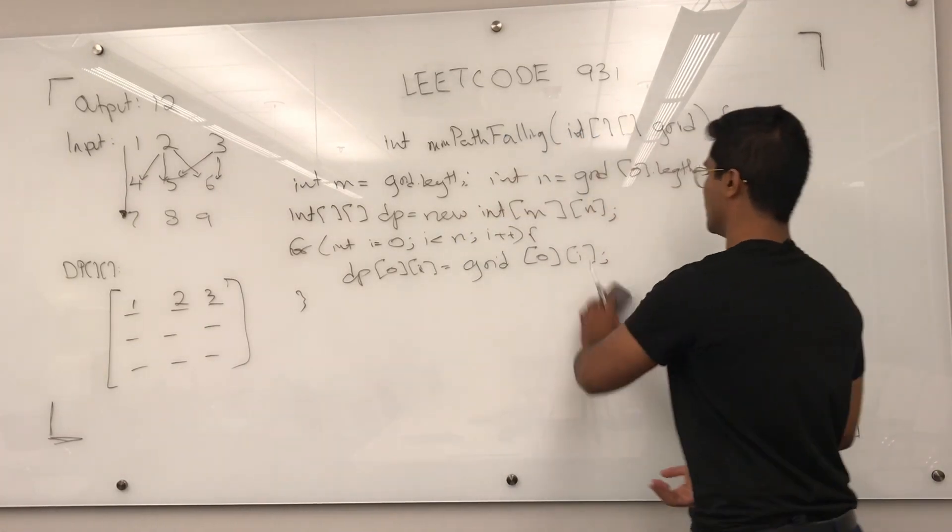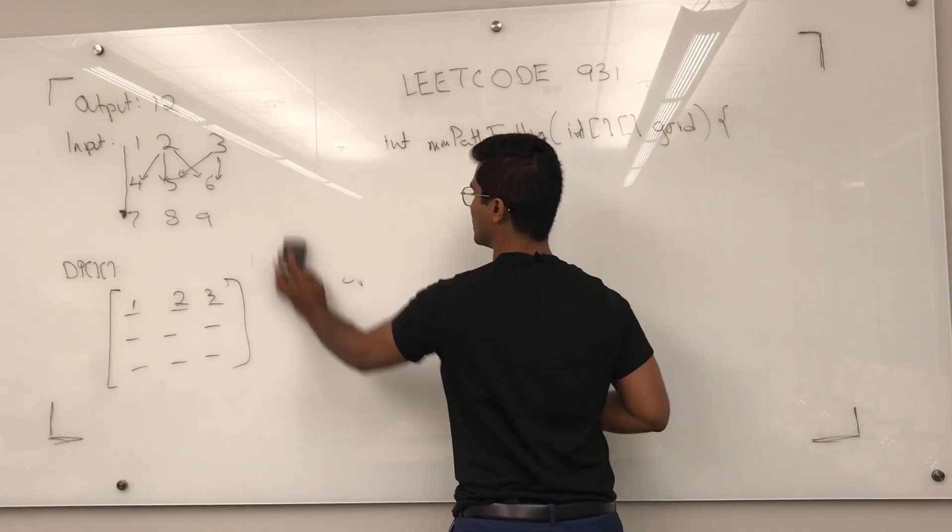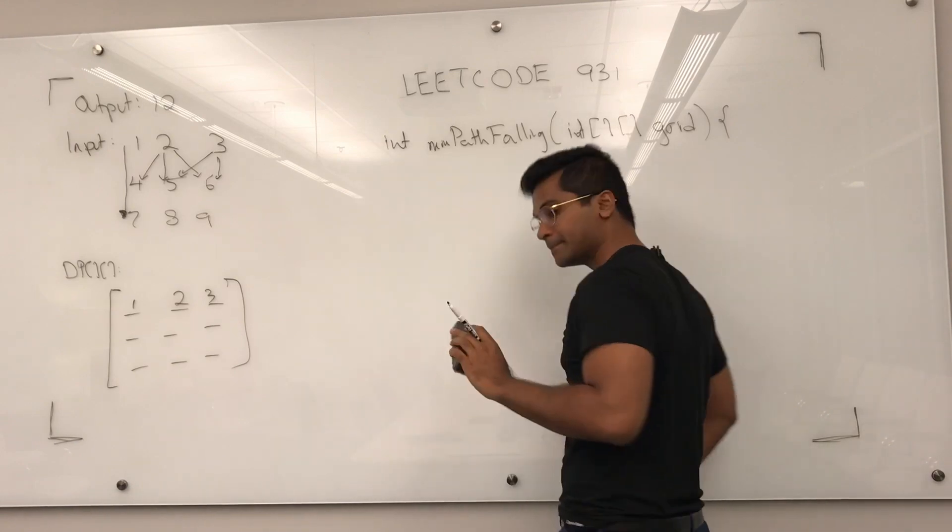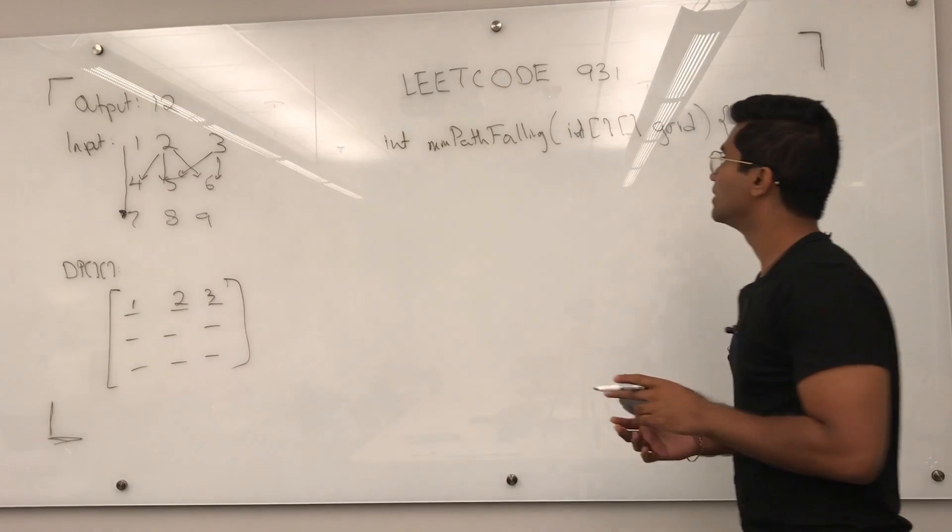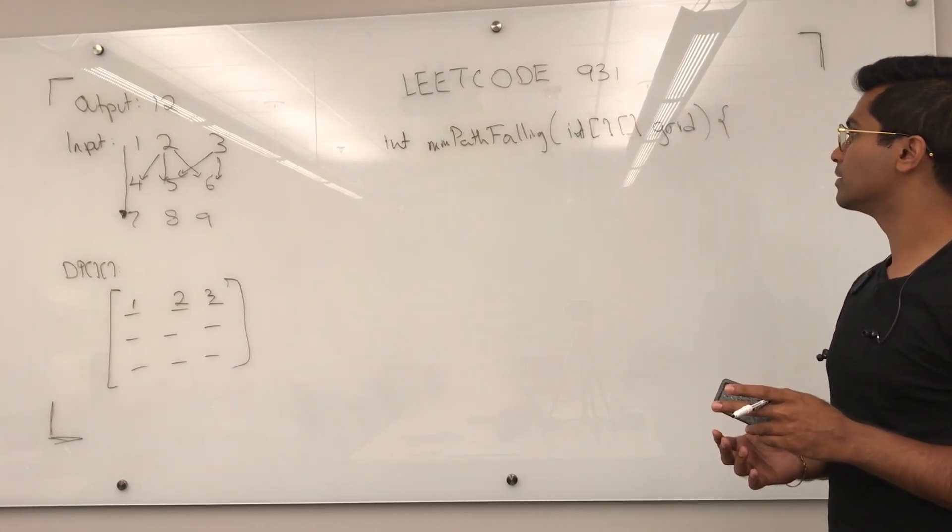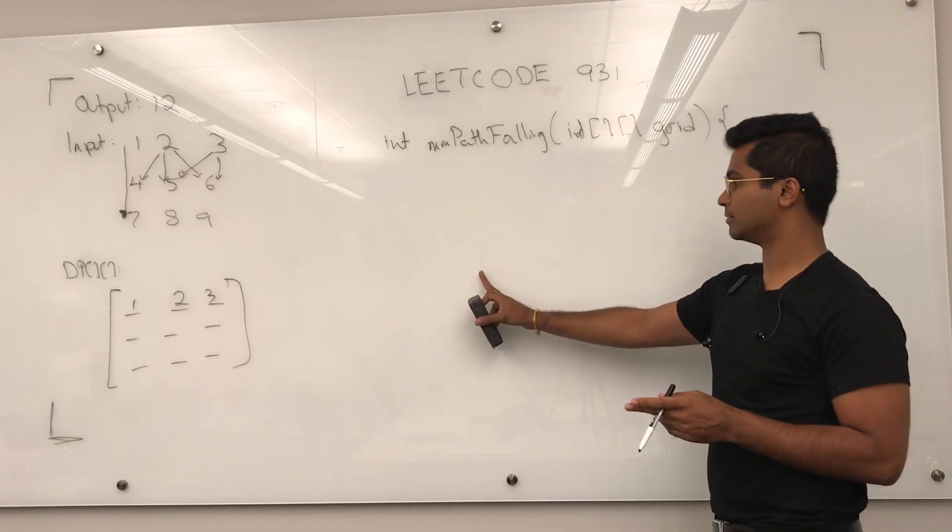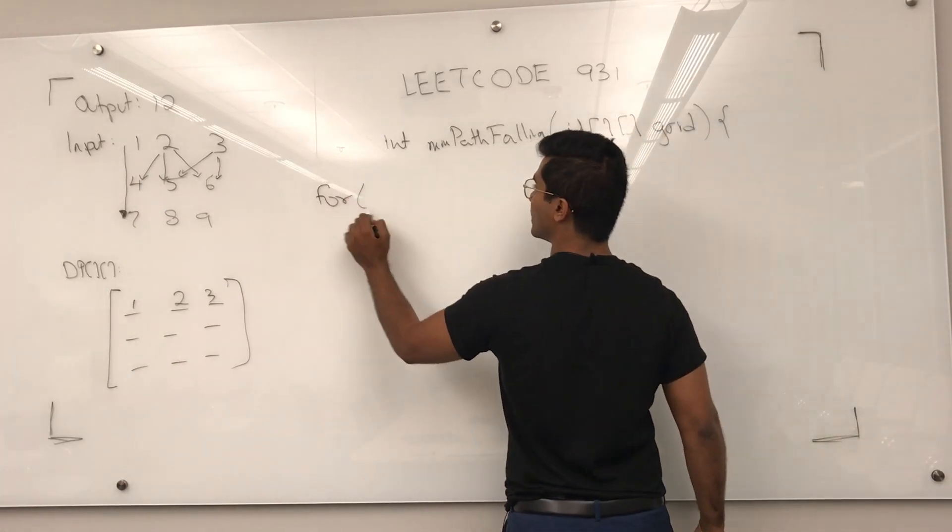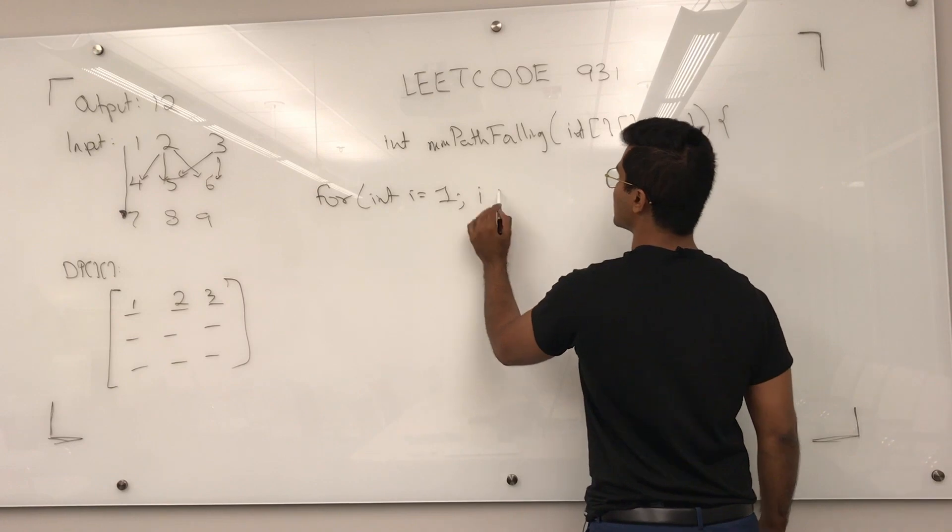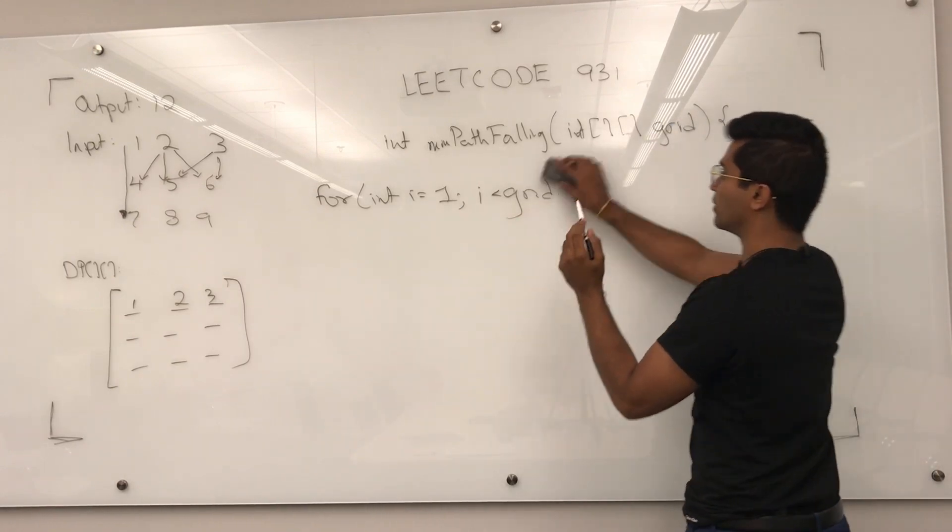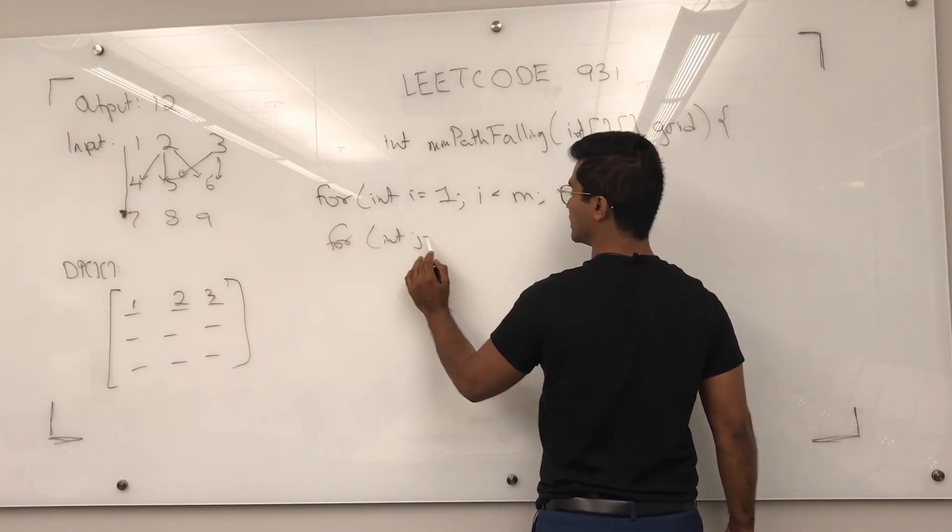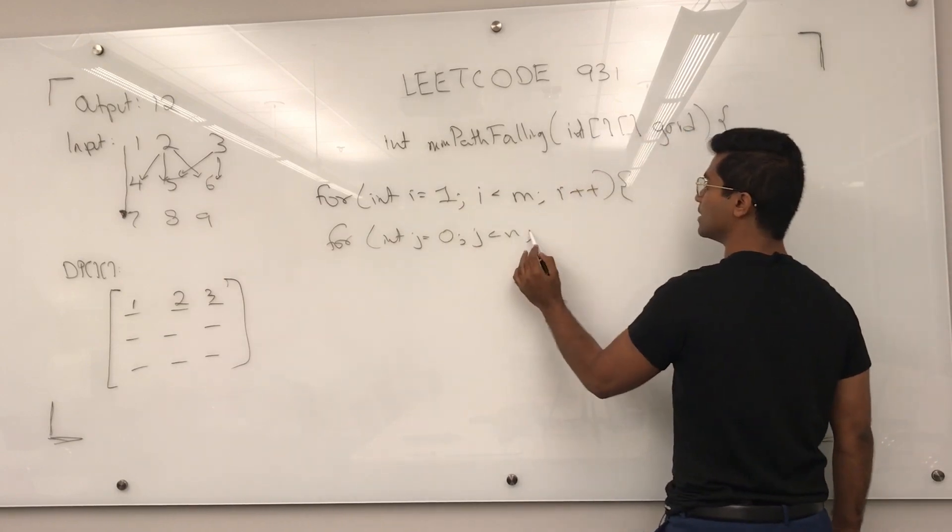Now, let's get into the meat of it. We have the for int i = 1; i < m; i++ for int j = 0; j < n; j++.